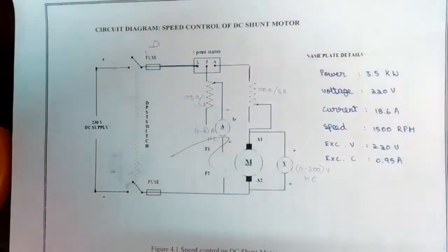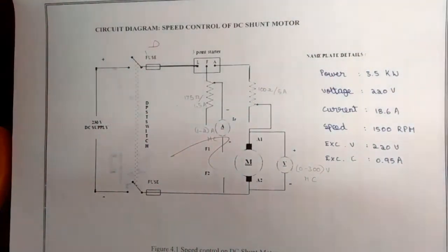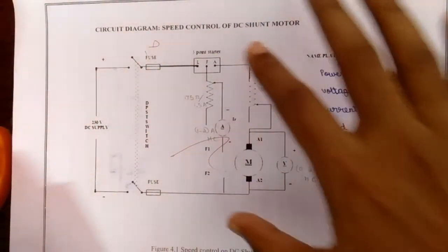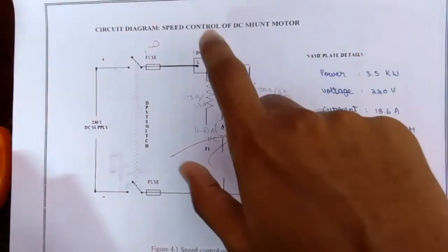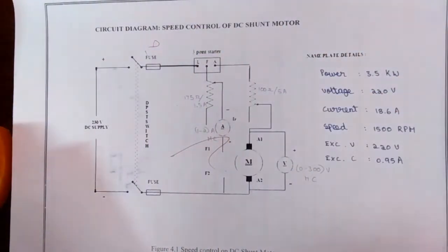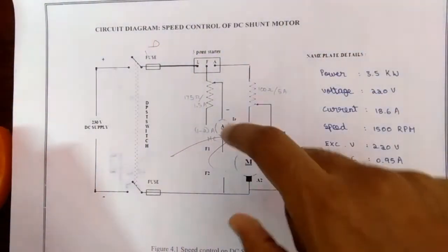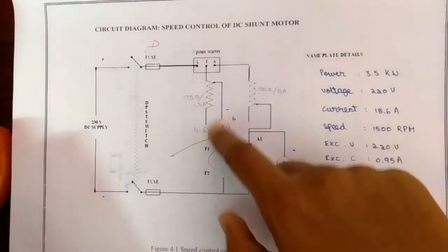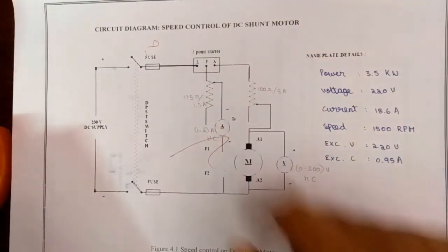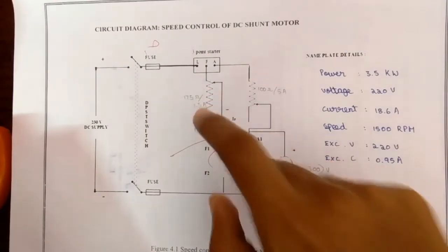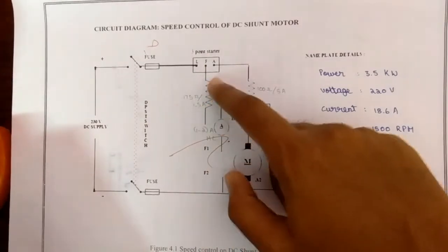For the armature control method, the procedure is: again the DPST switch is closed and the motor is started using the three-point starter. The armature is connected in series with the field rheostat. With this field rheostat the field current IF is maintained at a constant value by adjusting the field rheostat.